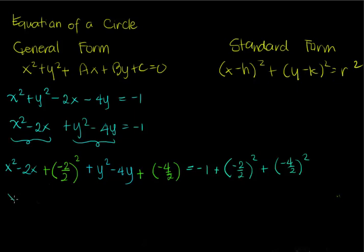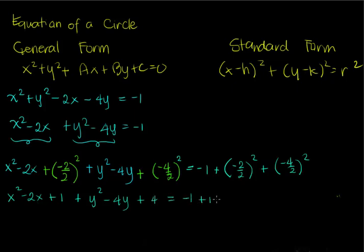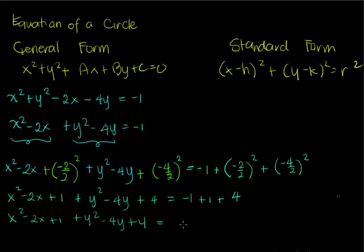Simplifying: negative 2 over 2 is negative 1, and squaring gives 1; negative 4 over 2 is negative 2, and squaring gives 4. So we have x squared minus 2x plus 1 plus y squared minus 4y plus 4 equals negative 1 plus 1 plus 4. Negative 1 plus 1 is 0, leaving positive 4 on the right side.